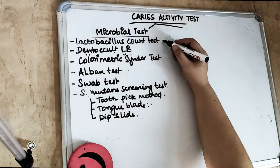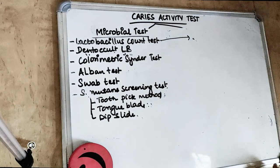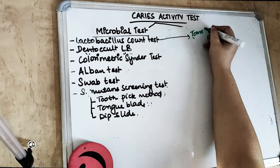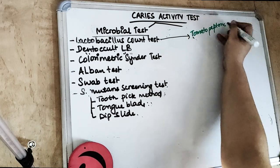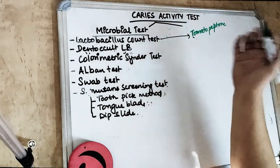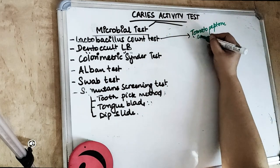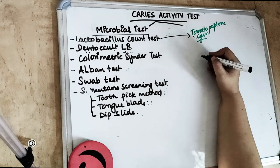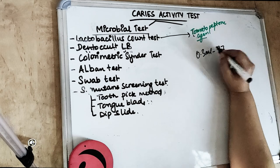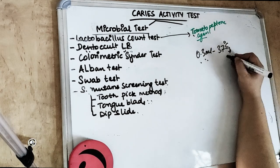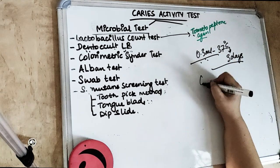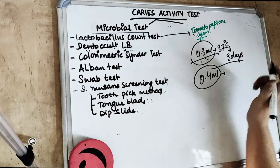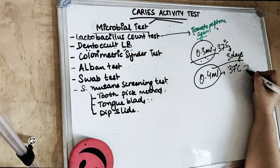Coming to the lactobacillus count test, it was given by Hadley in 1933. The agar medium used is tomato peptone agar. We take 0.3 to 0.4 ml of saliva collected from the patient's mouth and incubate at 37 degrees Celsius for 3 to 4 days. We ask the patient to chew a piece of paraffin — mostly flavored paraffin — to induce saliva, which is collected in marked tubes.